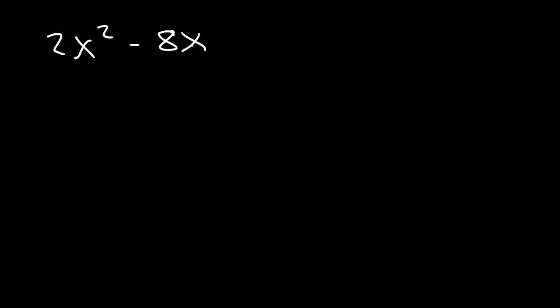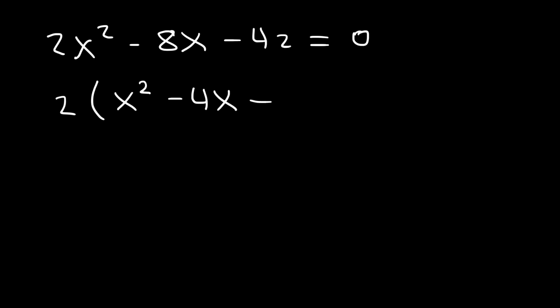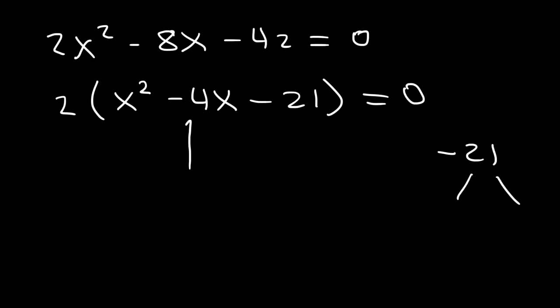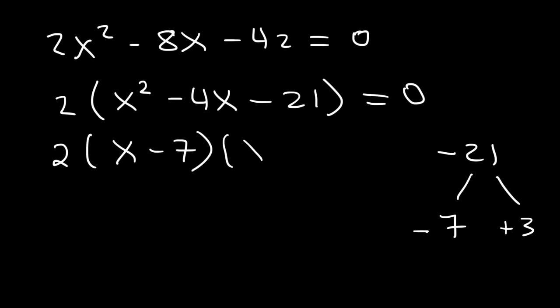Let's try another example: 2x squared minus 8x minus 42 is equal to zero. Notice that the leading coefficient is no longer 1. The first thing you should do is try to factor the GCF, which in this example is 2. That gives x squared minus 4x minus 21 inside. What two numbers multiply to negative 21 but add to negative 4? Negative 7 plus 3 adds up to negative 4. So this becomes 2 times x minus 7 times x plus 3, giving answers x equals 7 and x equals negative 3.